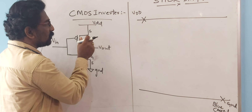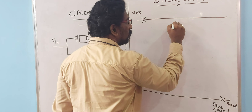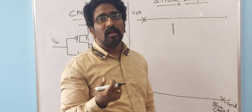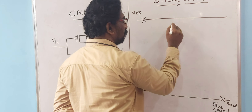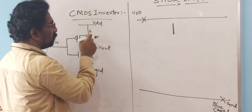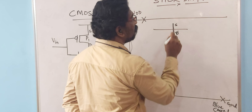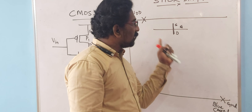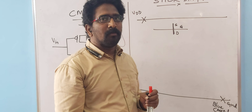For the PMOS, always take the P diffusion layer. The P diffusion layer is drawn as a single line and its color is either yellow or brown. Draw one horizontal P diffusion line. Upon this, draw a perpendicular line which will act as the gate terminal. This gives one terminal as source and the other as drain. This entire structure acts as one PMOS transistor, since it is drawn with P diffusion.